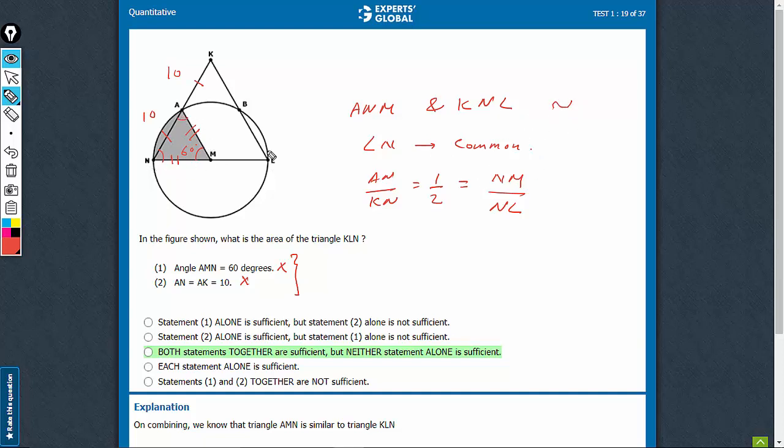Area of ANM can, of course, be determined very easily. Root 3 upon 4 into 10 square. And therefore, area of the bigger triangle would be, the common ratio is 2. So the area would be 2 square times of this. So the area of triangle KNL and the bigger triangle can be determined on combining the two. And therefore, C is the right answer choice.